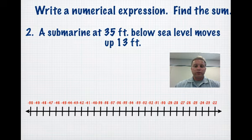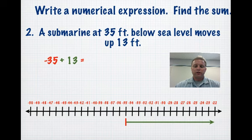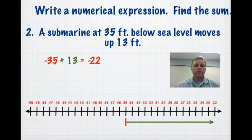Again, we want to write an addition problem. So a submarine at 35 feet below sea level moves up 13 feet. If we're below sea level, that's going to be in the negative. If we're moving up 13 feet, moving up is usually considered a positive. So there's our negative 35 there. Plus 13 puts us at negative 22 feet below sea level, or 22 feet below sea level. You have more negatives, so your answer should be negative.